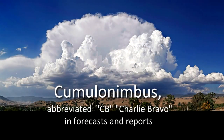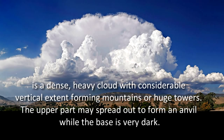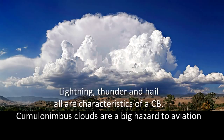Finally, Cumulonimbus, abbreviated CB, Charlie Bravo, in forecasts and reports, is a dense, heavy cloud with considerable vertical extent, forming mountains or huge towers. The upper part may spread out to form an anvil while the base is very dark. Lightning, thunder and hail are all characteristics of a CB. Cumulonimbus clouds are a big hazard to aviation.